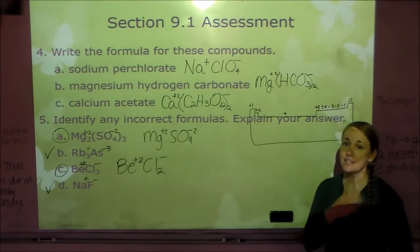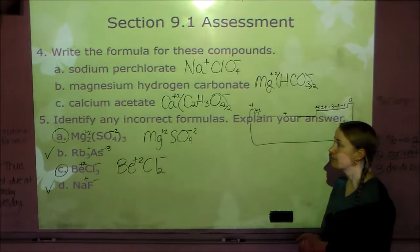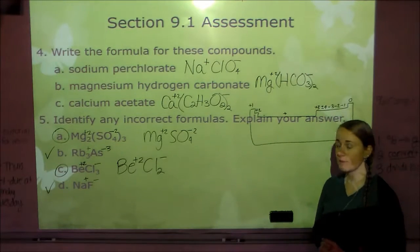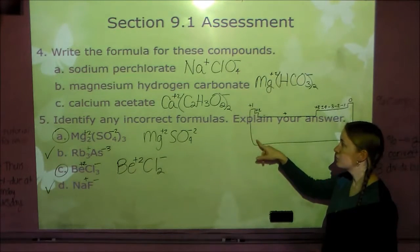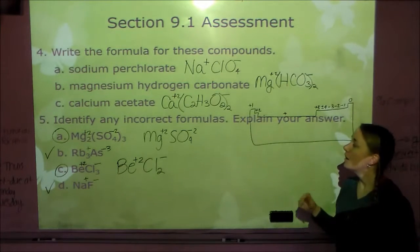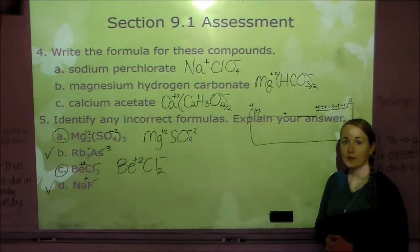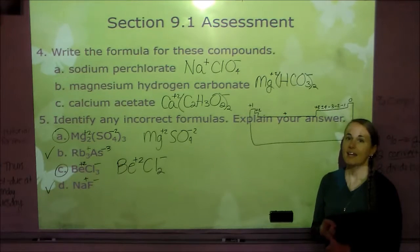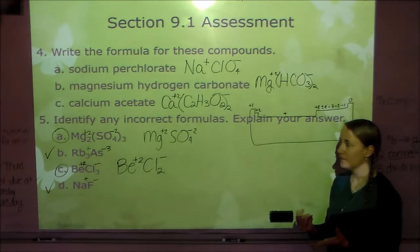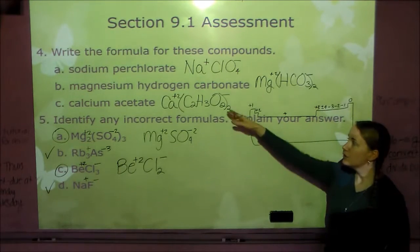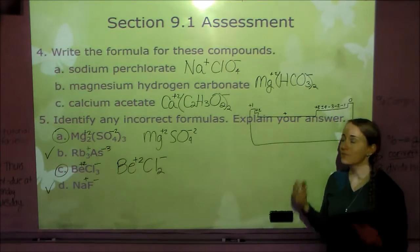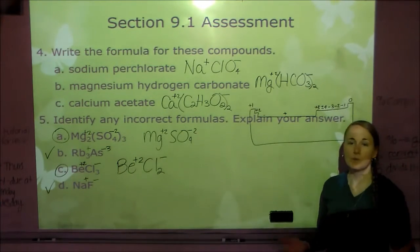The main thing to remember from section 9.1: when naming a compound that starts with a regular metal — groups 1 and 2, not hydrogen, and aluminum — name the metal, add -ide to the nonmetal, unless it's a polyatomic ion. When writing formulas, remember to cross the charges. If you remember that, 9.1 will be no problem.